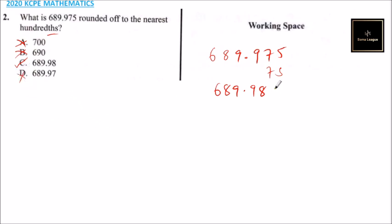Because the number next to seven is five, and when you are rounding off, if a number is five or greater than five, then we add one to the next number. So that is how you work out that question.